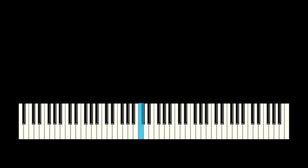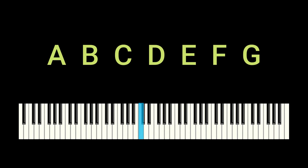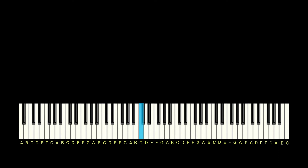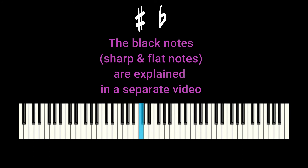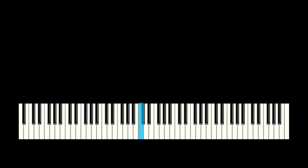The notes on your keyboard are given letters for names from A to G. When we get to a G the notes start again with A and the pattern is repeated, so each note has a letter allocated to it. The black notes on the keyboard are the sharps and flats, which will all be explained in a separate video.